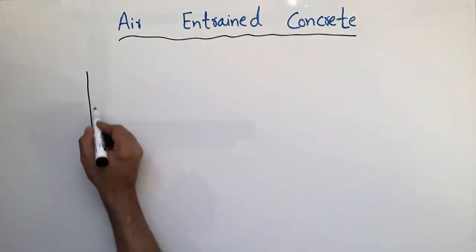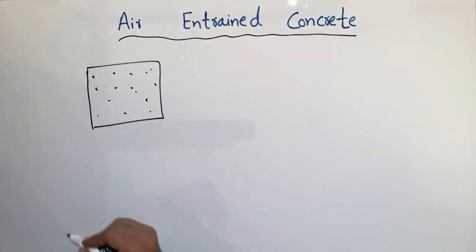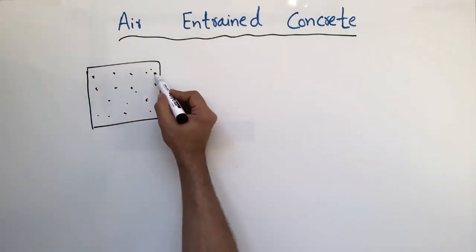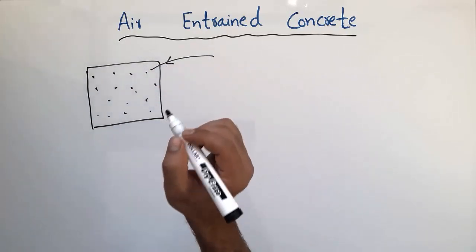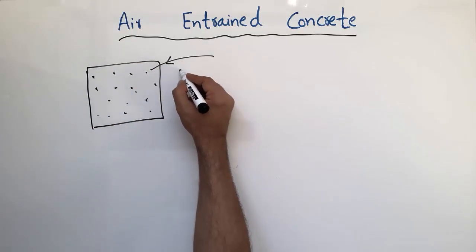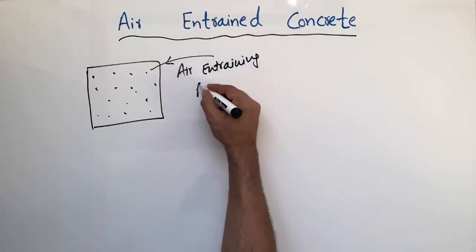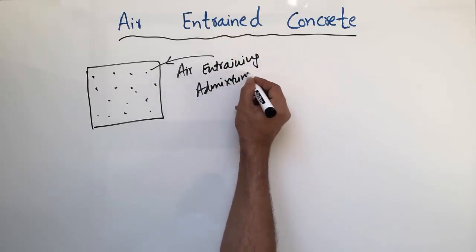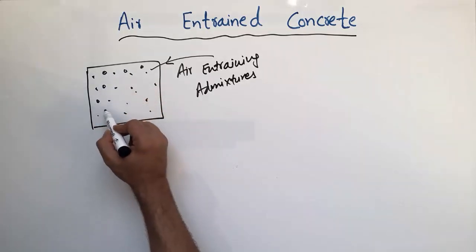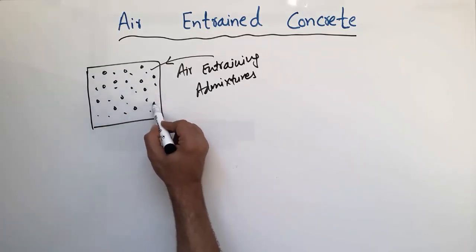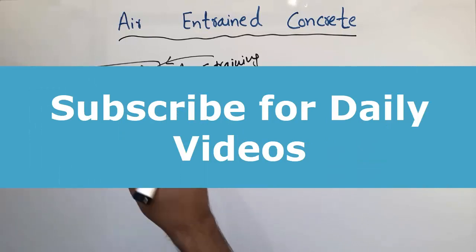Let's consider a concrete mixture with fine aggregate, coarse aggregate, cement particles, and water. This is the concrete mix. Air is intentionally produced into this concrete by placing an air entraining admixture inside the mix. This admixture produces small air bubbles inside the concrete which are uniformly distributed, and these air bubbles help to resist the freezing and thawing action.